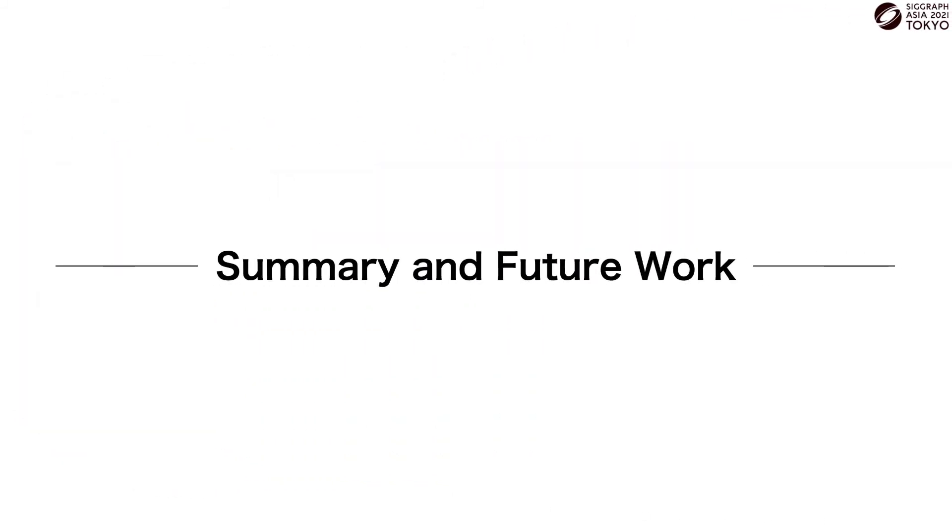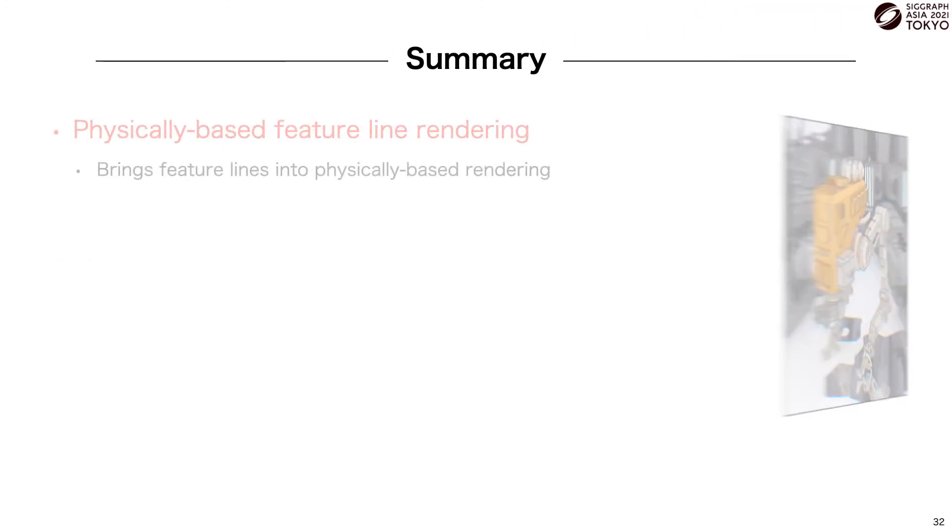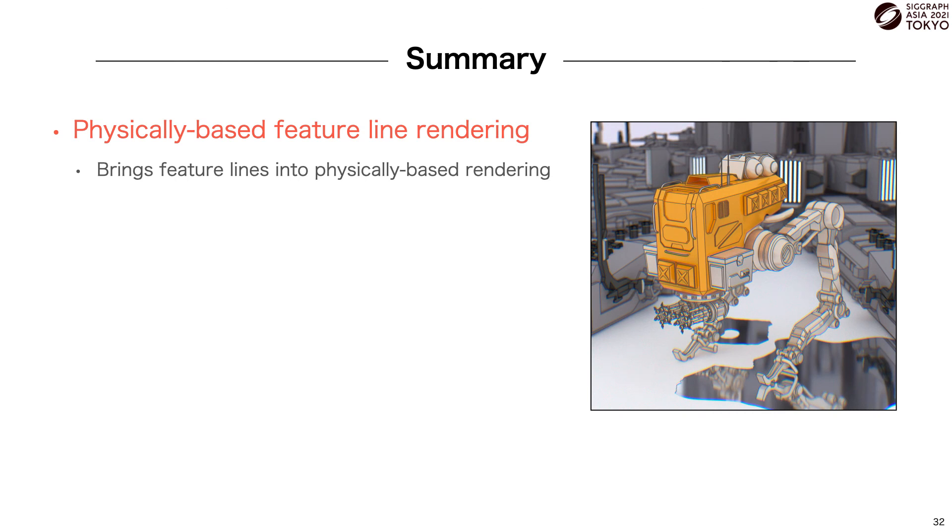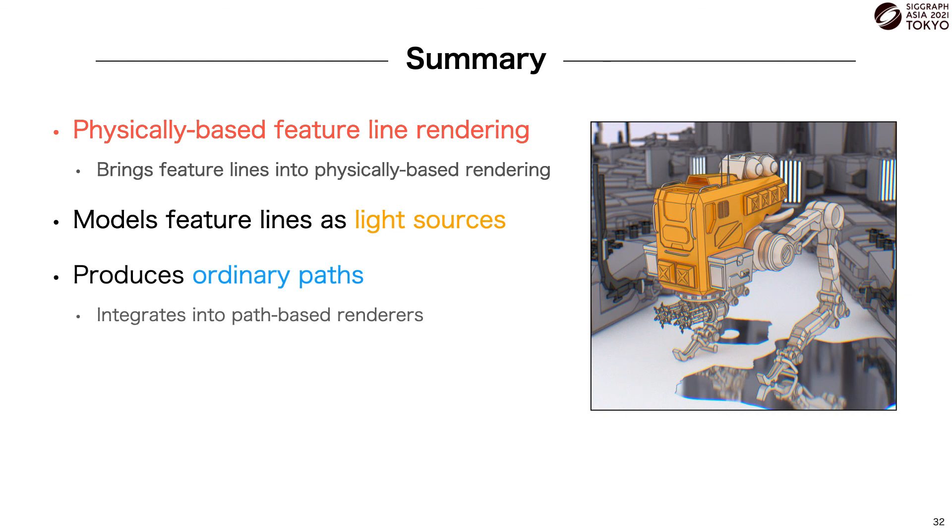Let's recap with a quick summary and then close with some potential future work. We introduced physically-based feature line rendering that brings ray-based feature line rendering into physically-based rendering by modeling feature lines as light sources and produces ordinary paths that easily integrate into path-based renderers. This opens up new avenues of creative expression for artists, adding support for effects like glossy reflections, depth of field, and spectral dispersion. But this is just a first step.